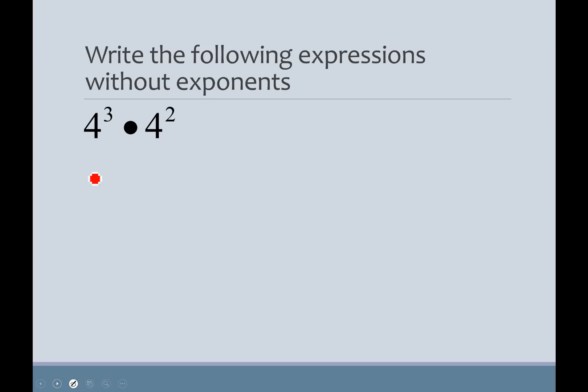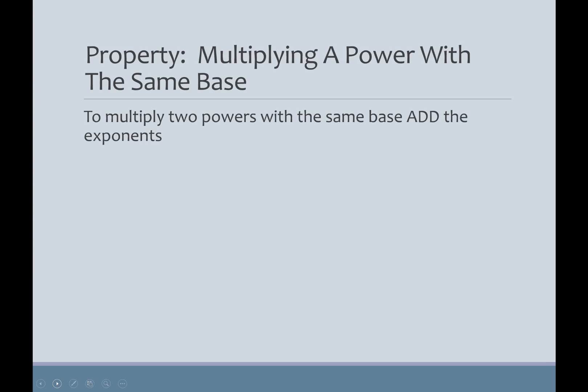4 to the third power is the same as saying 4 multiplied by itself 3 times. And then 4 squared is 4 multiplied by itself twice. When I put that all together and write it as, going back to writing it with exponents, this is 4 to the fifth. Again, 3 plus 2 is 5. That's not a coincidence. That's your first rule of exponents.